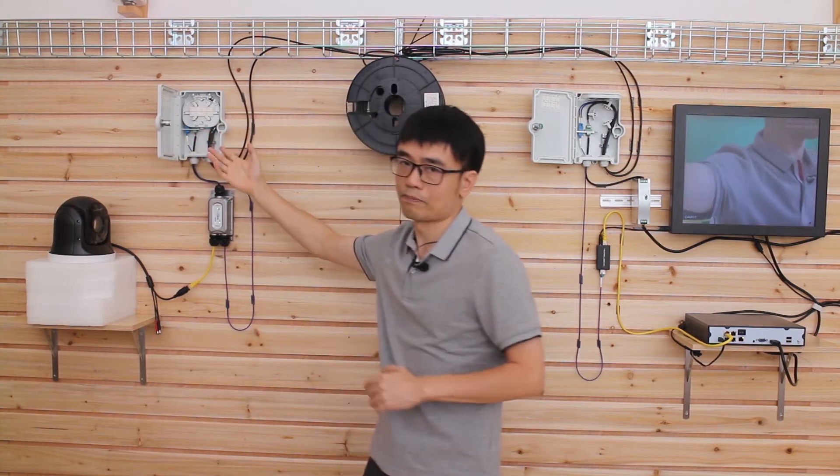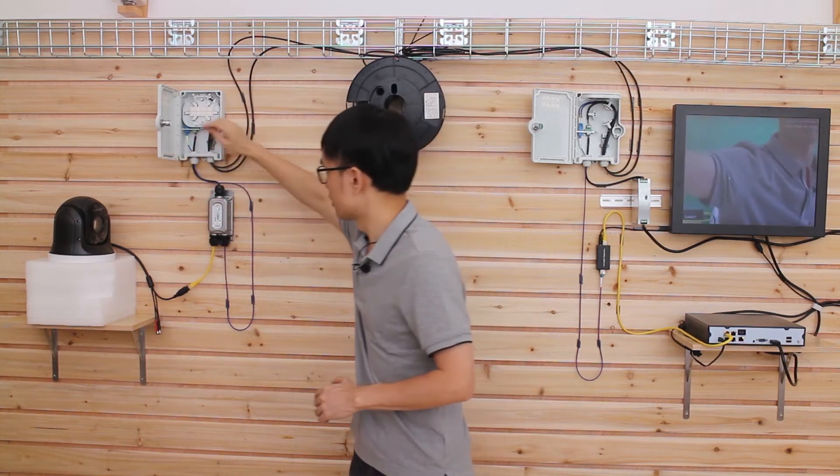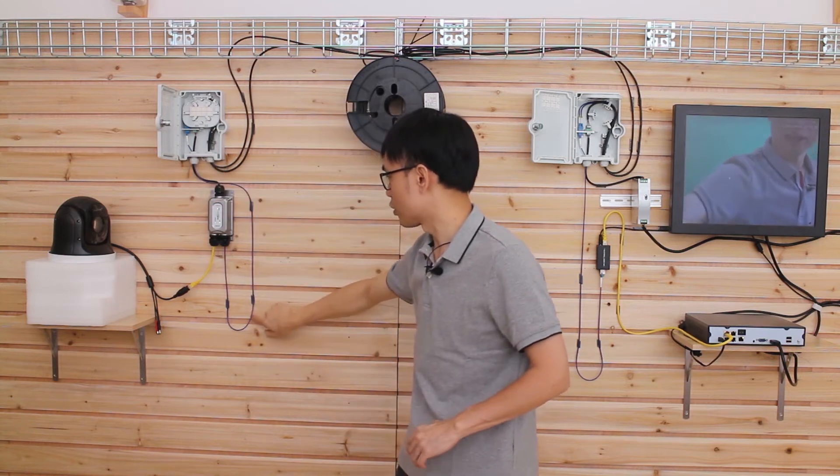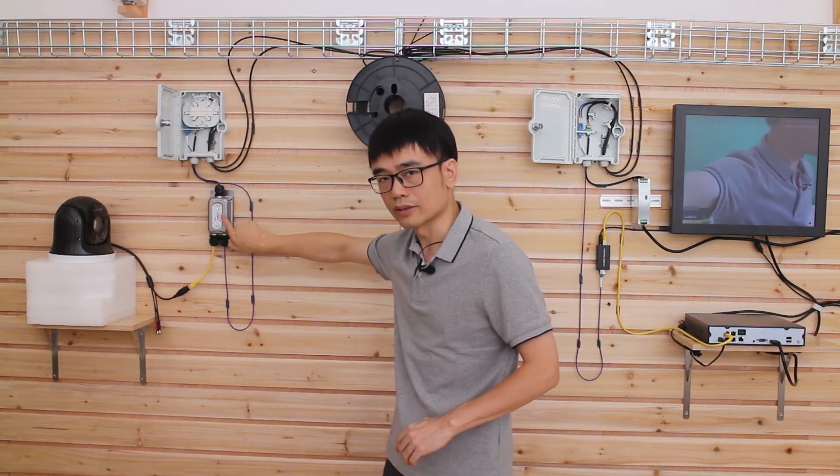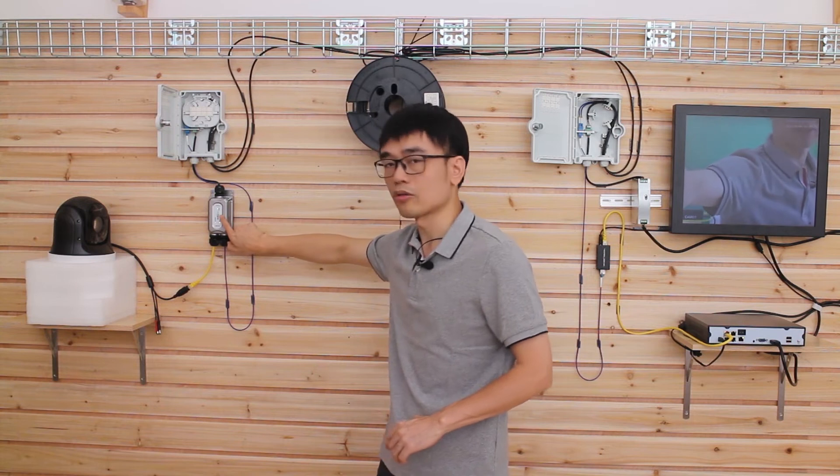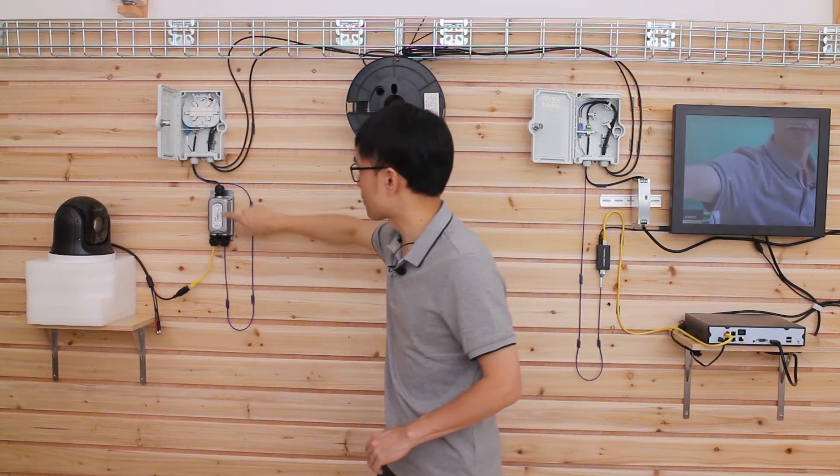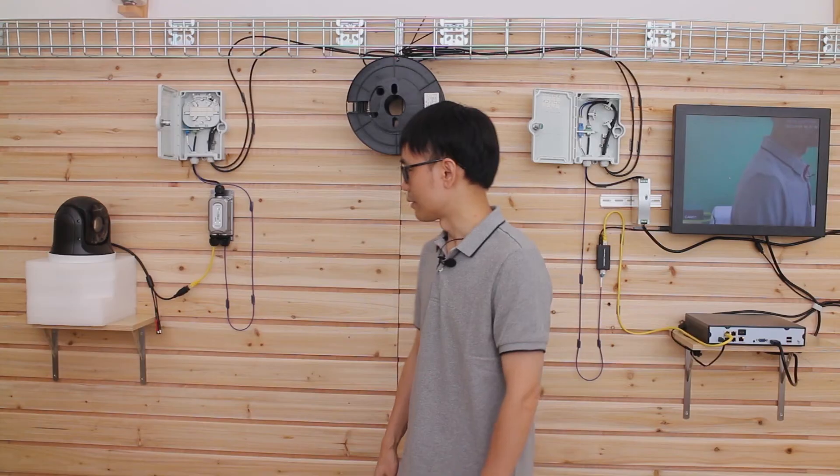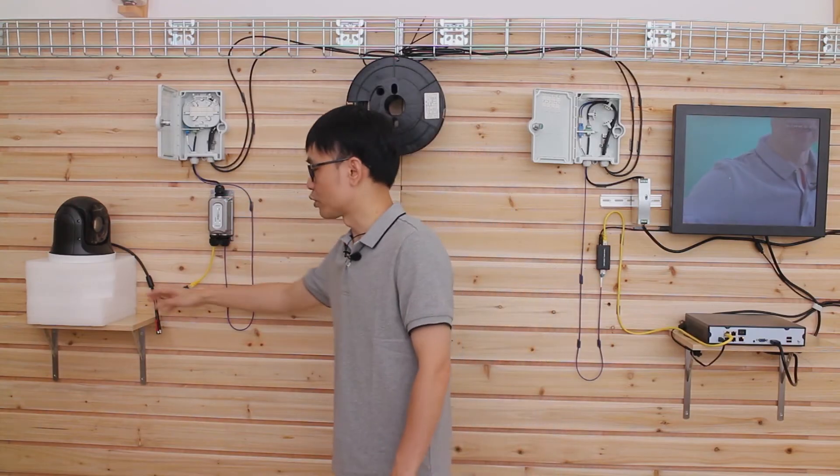This is also a box for cable management. From here, we have two outputs. One is the fiber optic cable going to this media converter—this is an outdoor PoE media converter. The power comes from here and also goes to the media converter. Now we have standard PoE output to the IP camera.